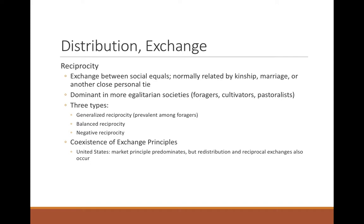Balanced reciprocity is exchange among acquaintances — I work an hour for you and expect roughly an hour's work from you within the next week or so. With close bonds like kinship and friendship, there's no strict repayment deadline. Among the Akwana horticulturalists of Brazil, kin might work five hours for you and receive only one hour back. For acquaintances, if you work five hours you expect five hours in return before helping again. The strength of the relationship determines whether generalized or balanced reciprocity applies.